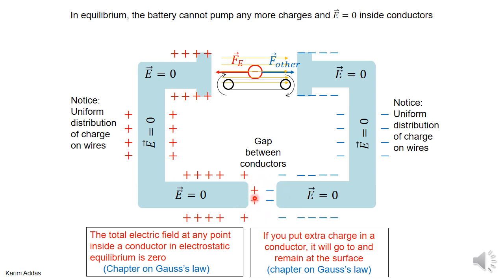Since the circuit is open, a current cannot be established and maintained, because there's a gap. So the electric field goes to zero. The charge distribution becomes more uniform, distributing itself to make the electric field zero inside the wire everywhere. It remains in this condition until you fill the gap and close the circuit.